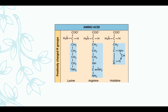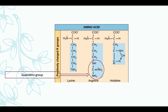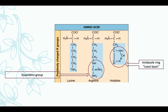Now let's move to basic R-groups. Your arginine has a guanidino group, which looks like urea. Your histidine, on the other hand, has an imidazole ring and it's the least basic in the group, with an almost neutral isoelectric point. We'll discuss the isoelectric point later.